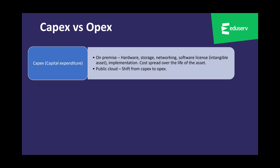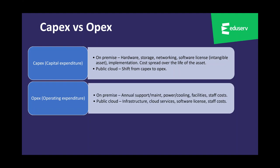For example, if you buy a server and you have a depreciation policy of five years, you'll see a fifth of that cost over the next five years featuring in your costs as depreciation. In public cloud there is a shift from CapEx to OpEx. OpEx — operating expenditure — is the ongoing cost of running your business that impacts expenditure in the current financial year. On-premise OpEx includes annual support and maintenance, power, cooling, facilities, and staff costs. In public cloud, OpEx covers everything: the infrastructure, cloud services, software licensing, and staff costs.